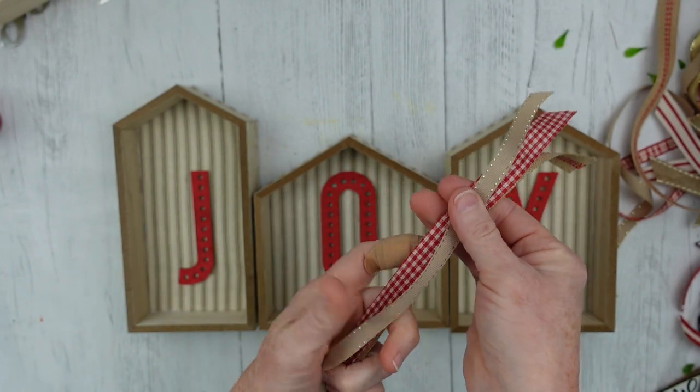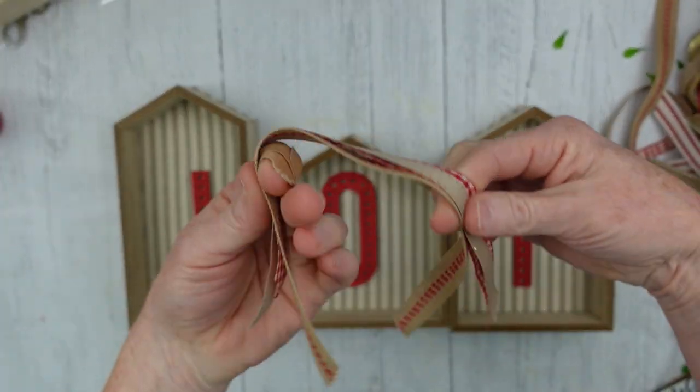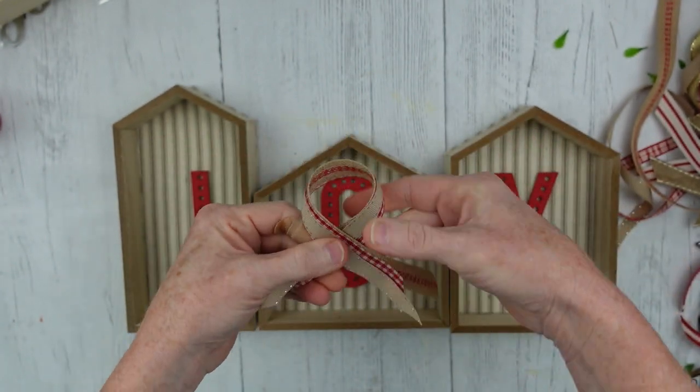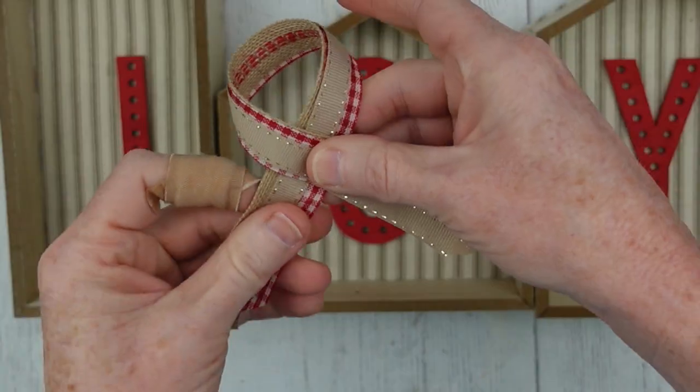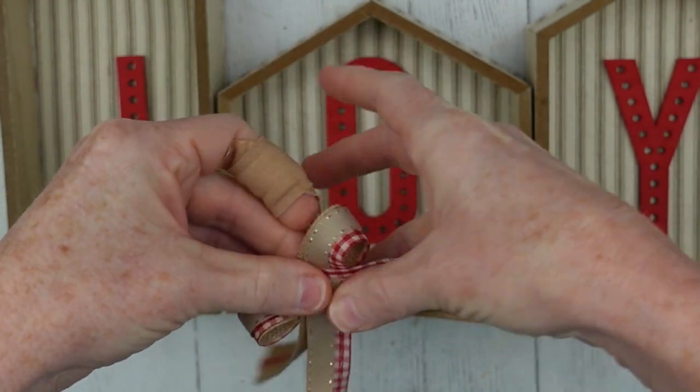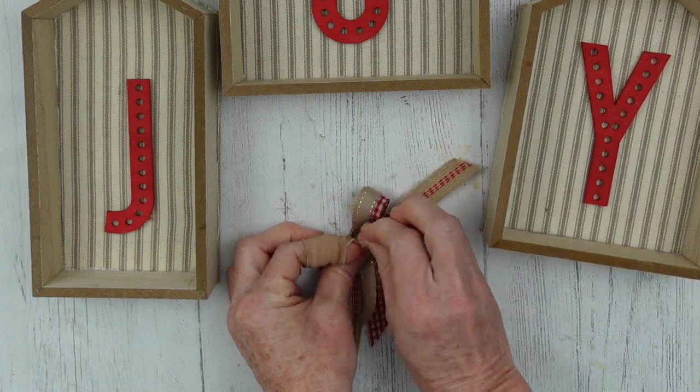Now we're going to take stacks of ribbon. These are all beige, white, and red ribbons that I have, and I'm going to use a different pattern and different style ribbon for each of these houses to embellish them. This is the same bow as we did the first time, but you're doing it with three ribbons instead of one.